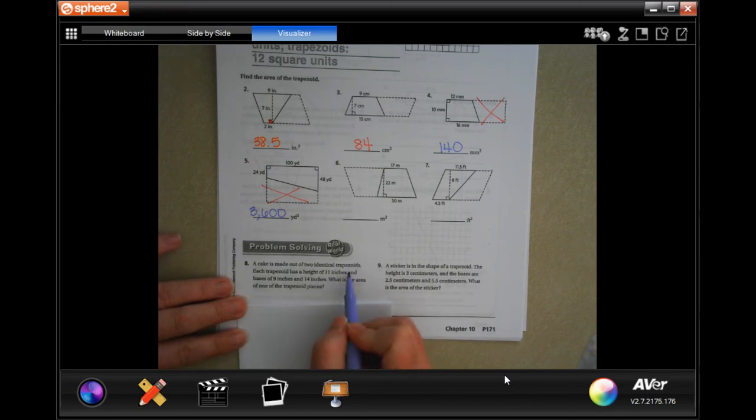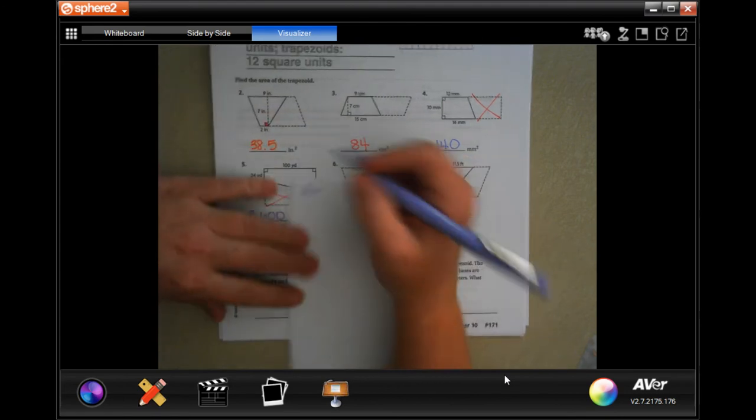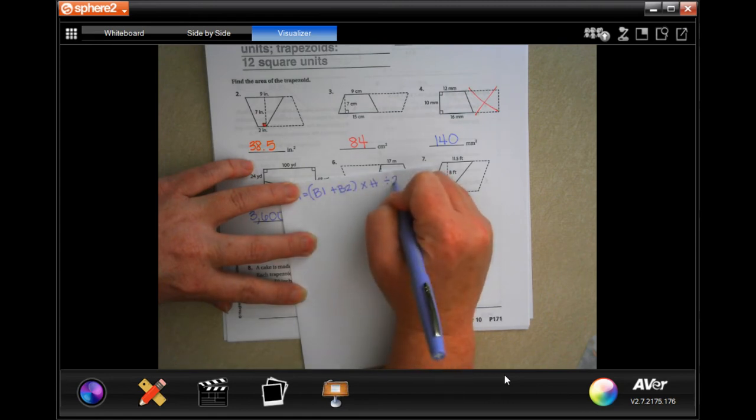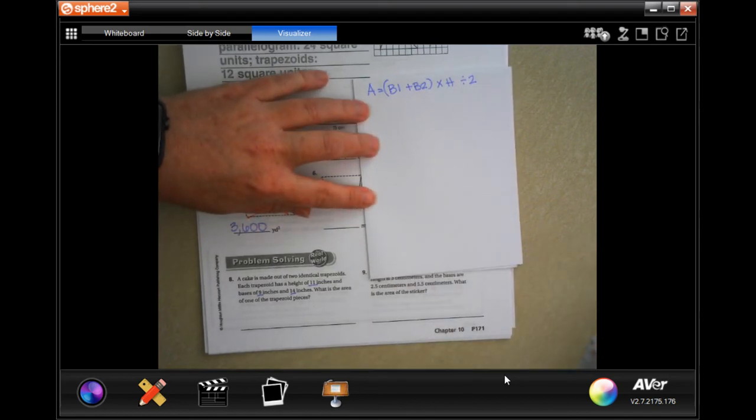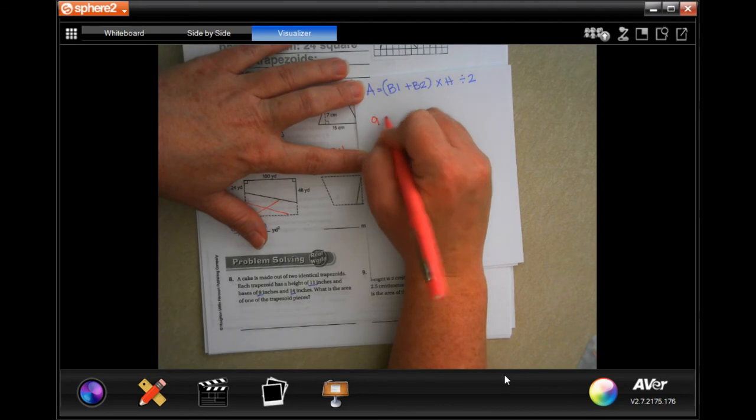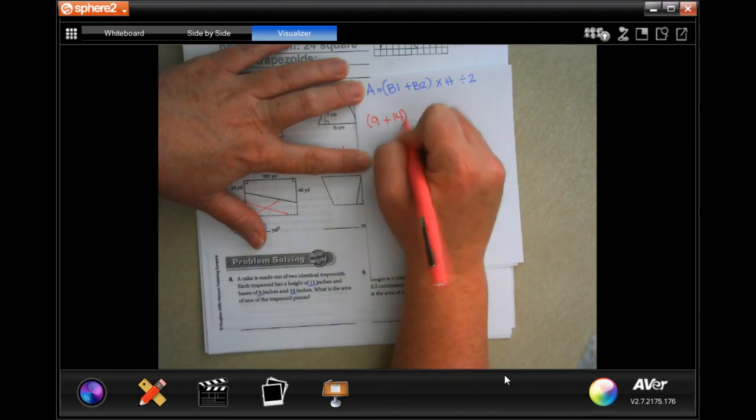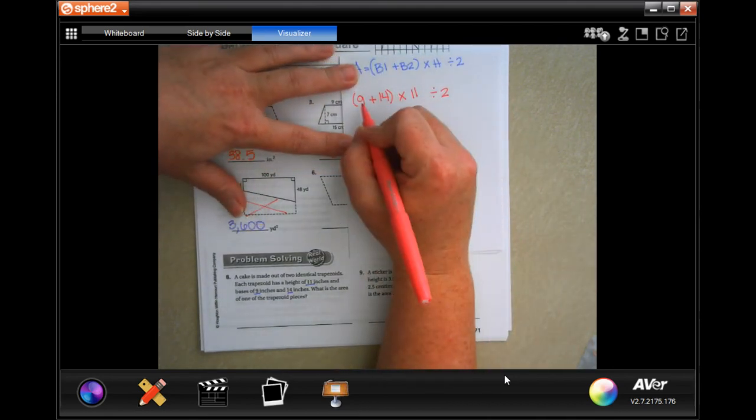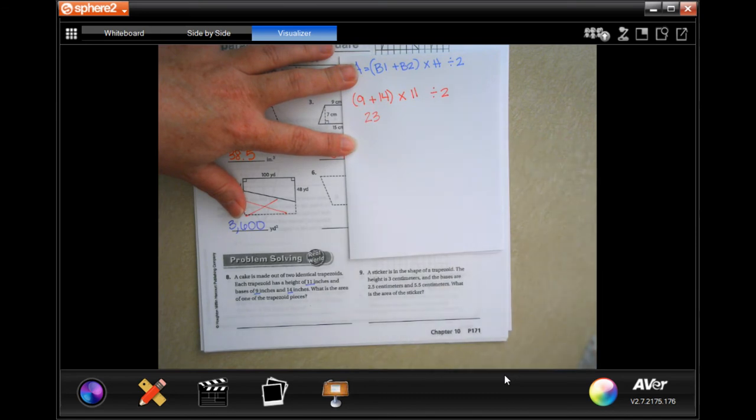The cake is made out of two identical trapezoids. So each trapezoid has a height of 11 inches, base of 9 and 14. What is the area of one of the trapezoid pieces? So each one of them has this. So all we need to do is one. So the area equals base 1 plus base 2 times the height divided by 2. So base 1 is 9, base 2 is 14, times the height of 11, and then we're going to divide it by 2. All right, so 9 plus 14 is going to be 23.